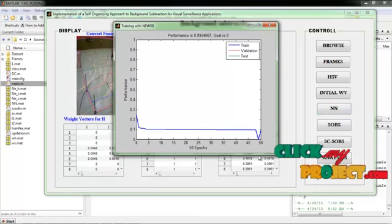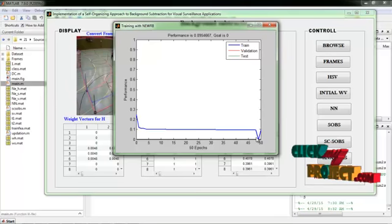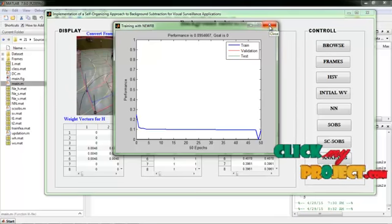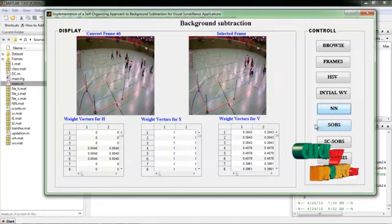The neural network will be training and it is the graph for neural network training. And the train and the validation test will be the same. So the performance of our process will be 0.09%. Now we go to extract the background by using the SOPS algorithm.